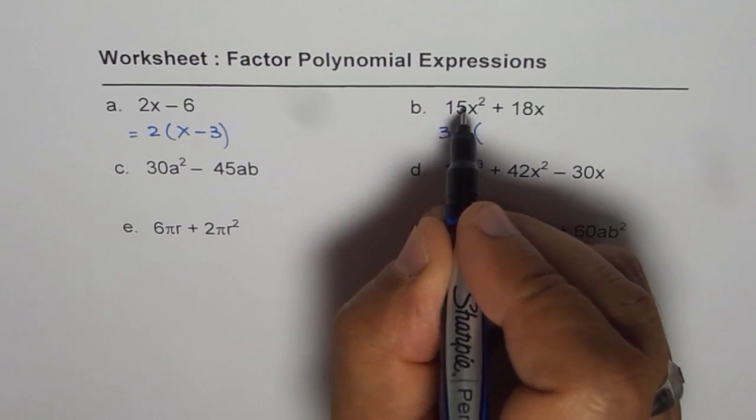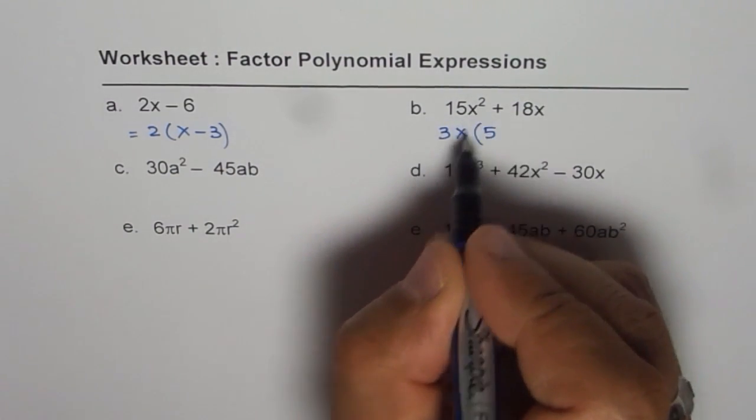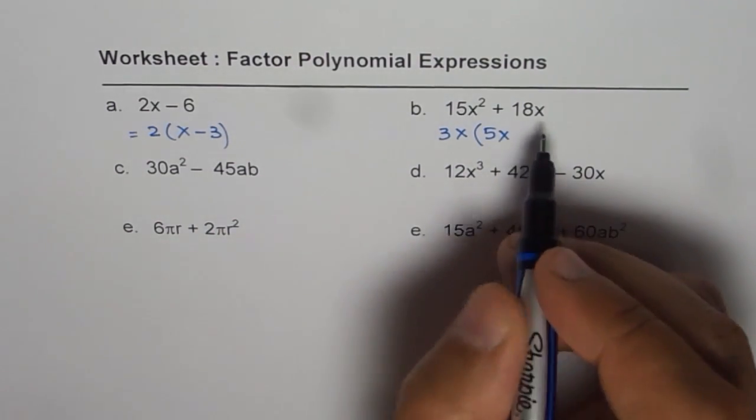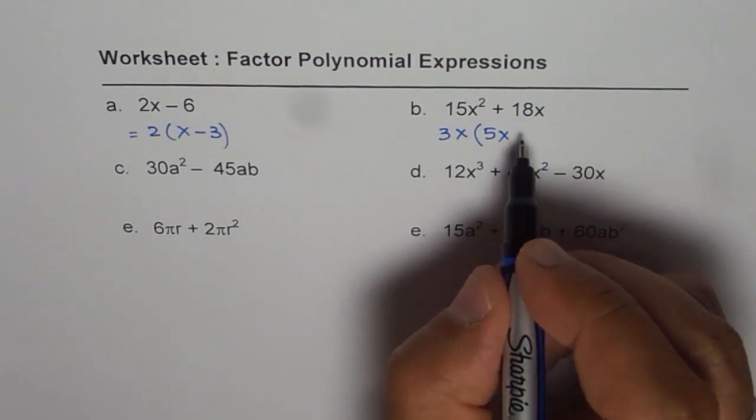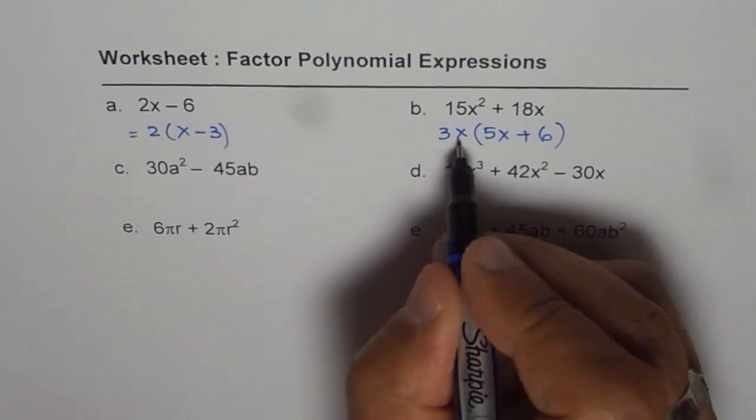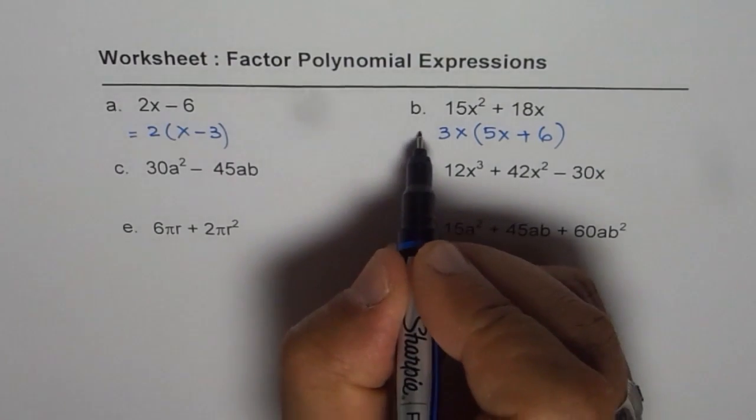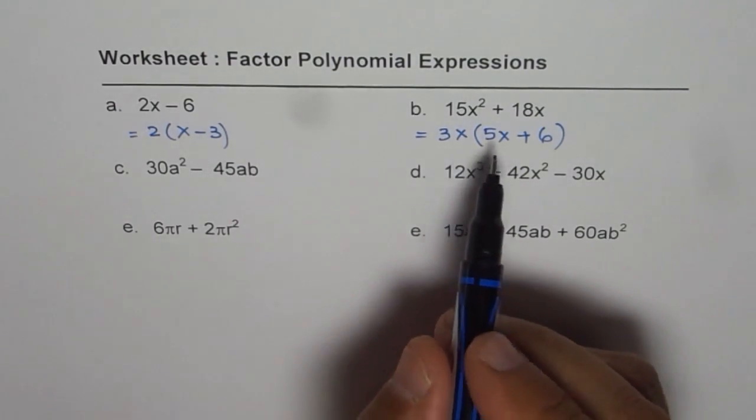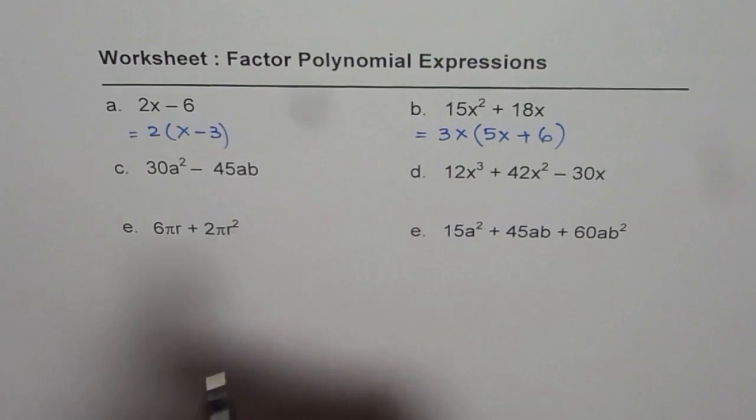3x times 3 times 5 is 15. x squared divided by x is x. For 18, 18 divided by 3 is 6. We get 6 here, and x divided by x is 1. That is how we can factor 15x squared plus 18x.